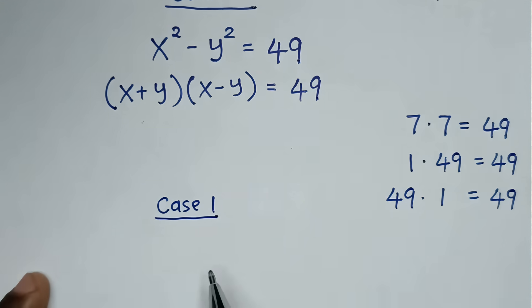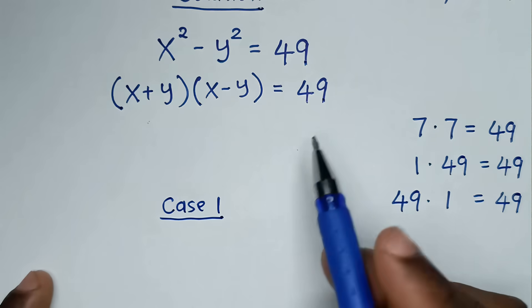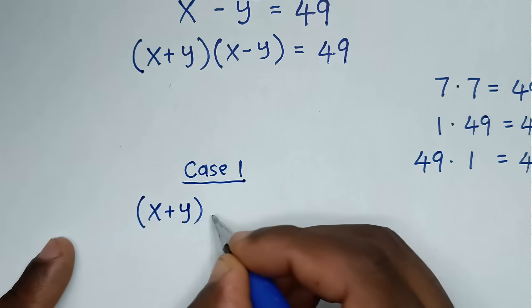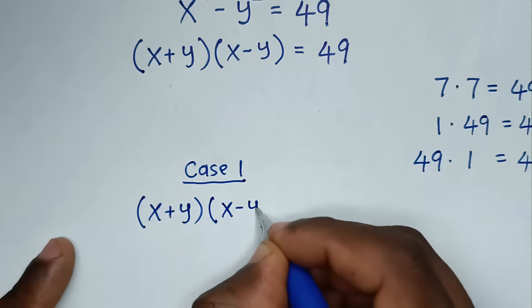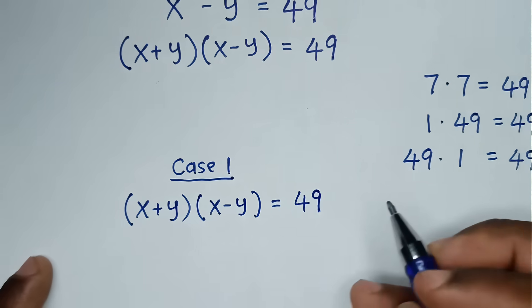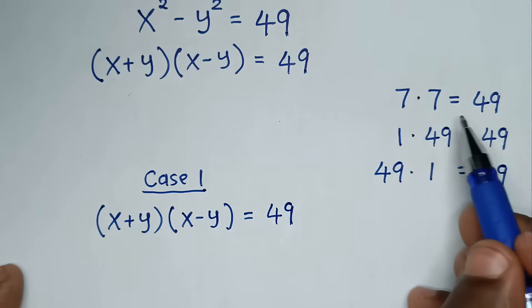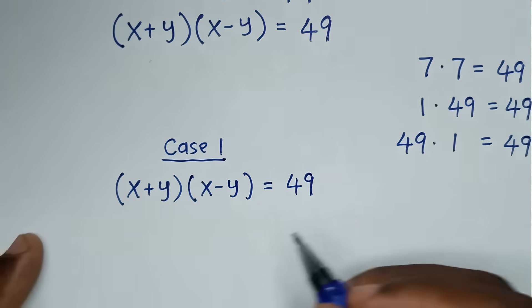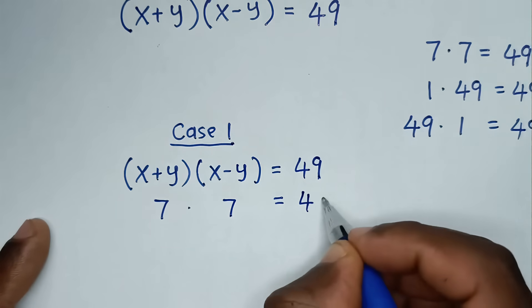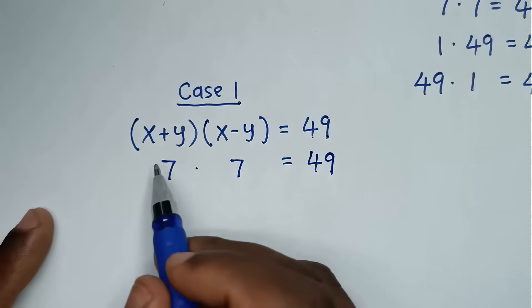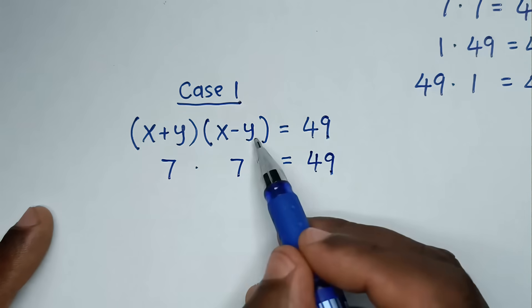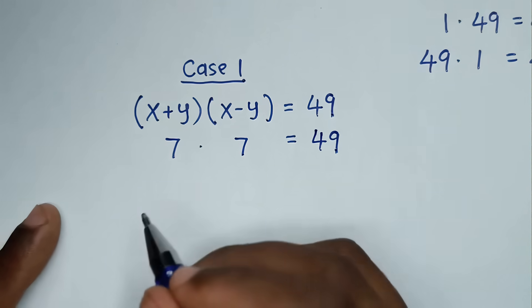From the equation (x + y)(x - y) = 49, by case 1, we have 7 times 7 is equal to 49. So we will compare: x plus y is equal to 7, and x minus y is equal to 7. So we have two equations.